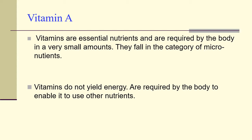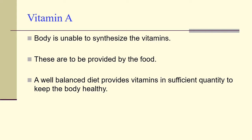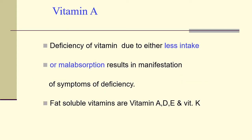Today we will first see what vitamins are. Vitamins are essential nutrients required by the body in very small amounts — they fall in the category of micronutrients. Vitamins do not yield energy; they are required by the body to enable it to use other nutrients. As the body is unable to synthesize vitamins, these must be provided by food. A well-balanced diet provides vitamins in sufficient quantity. Deficiency due to either less intake or malabsorption leads to manifestations of vitamin deficiency.